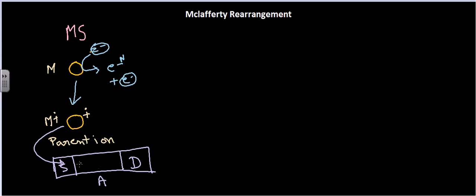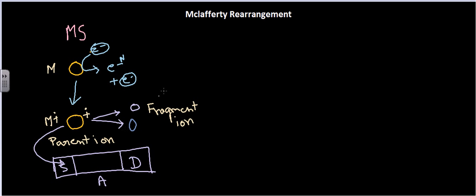The parent ion is then transferred from the source region to the analyzer, travels through the analyzer, and hits the detector. During this journey through the analyzer, the parent ion can further divide and generate smaller ions called fragment ions. The McLafferty rearrangement helps us predict what kind of fragmentation we are going to observe as the parent ion moves through the analyzer.